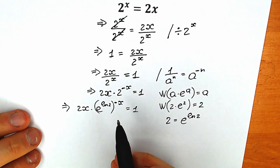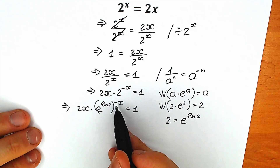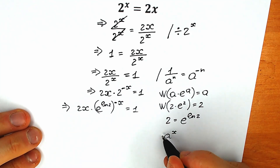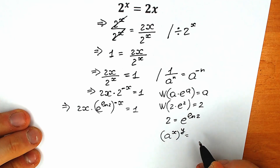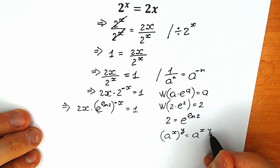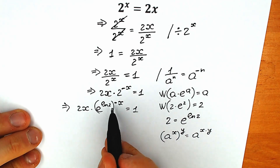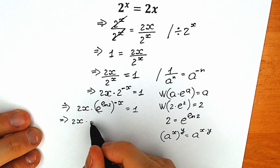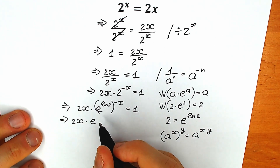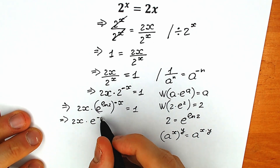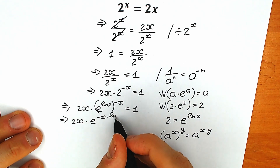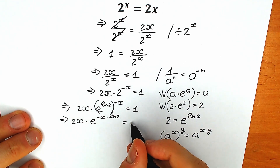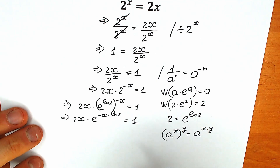Right now, this e to the power natural log 2 can be raised by minus x. It's like a to the power x raised to the power y — we can write it as a to the power x times y, multiplying our exponents. So as a result we have 2x times e to the power minus x times natural log 2, equal to 1.